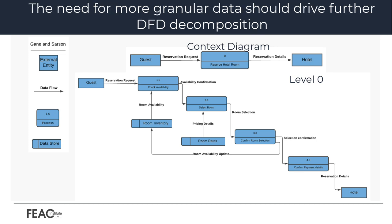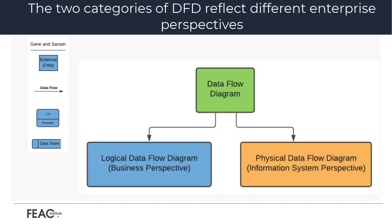Based upon the circumstances, there may be a need for additional detail for one or all of the level 0 processes. The need for more granular data detail should drive this need, so as not to misuse this as simply another process diagram. The second objective of this presentation is to examine the two categories of DFD: logical versus physical. A logical DFD focuses on the business and business-related information flows between business activities, while a physical DFD looks at how a system is implemented. Logical DFDs identify what needs to happen from a business perspective, while the physical DFD focuses on how it will happen from an information system perspective.